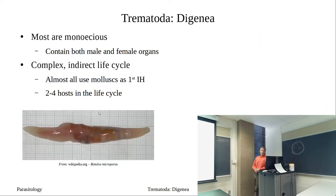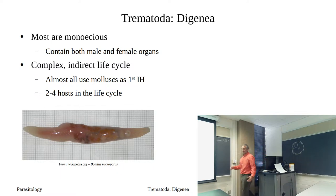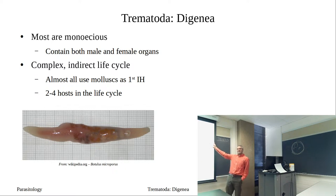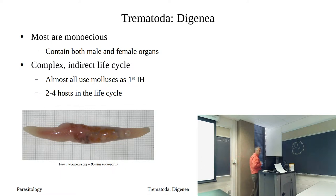Most of our worms are monoecious. What does that mean? They have both sexes in the same body — hermaphroditic worms. They contain both male and female organs. We've seen this in the lab with the worms we looked at.